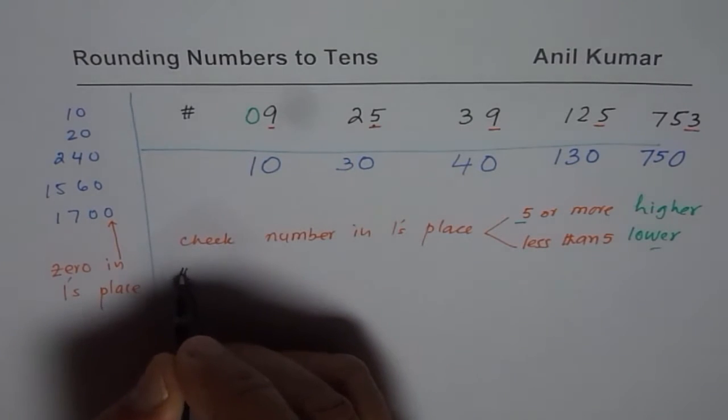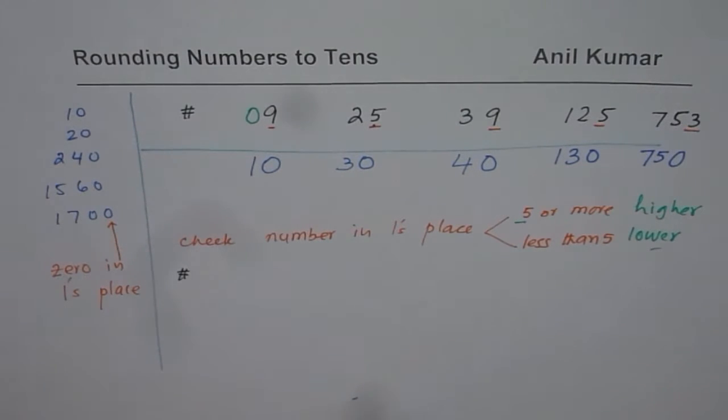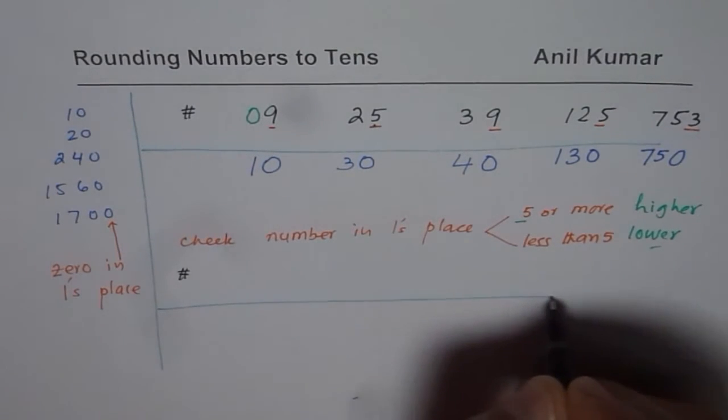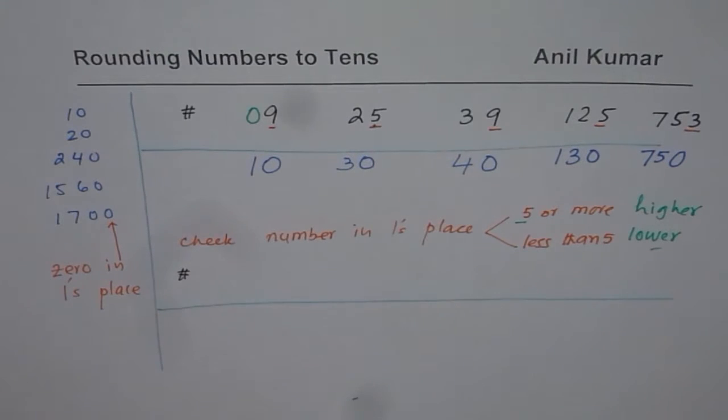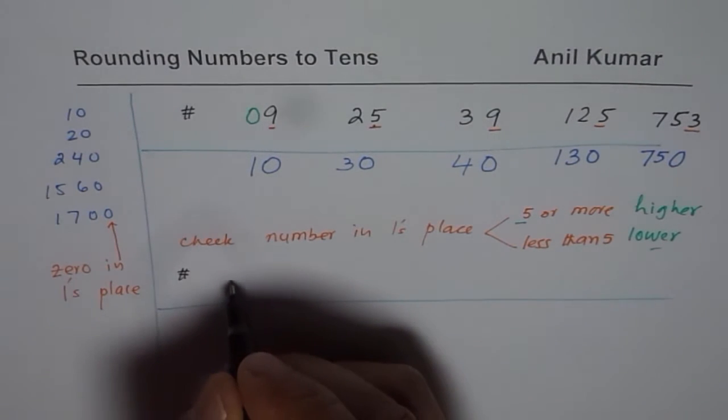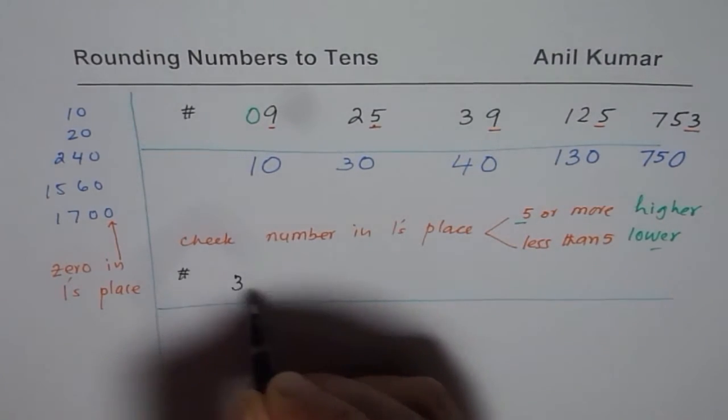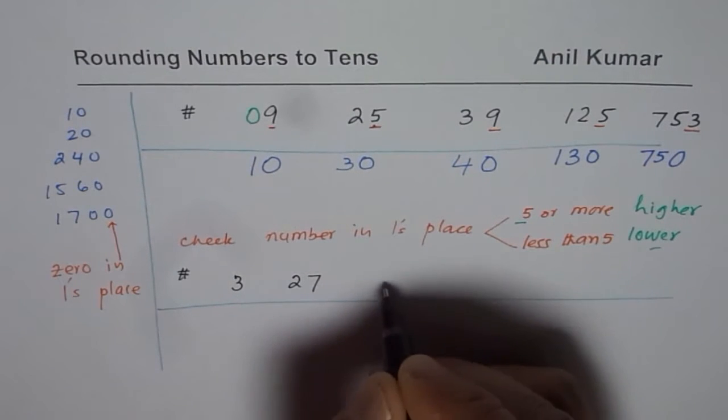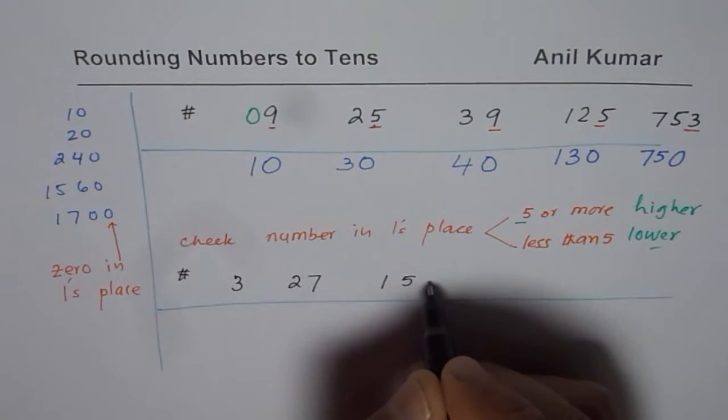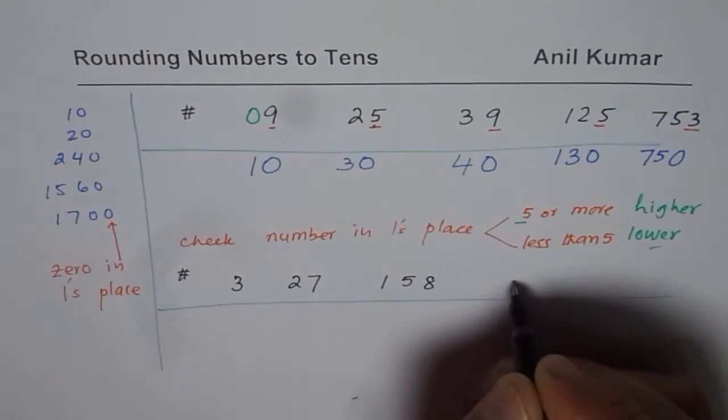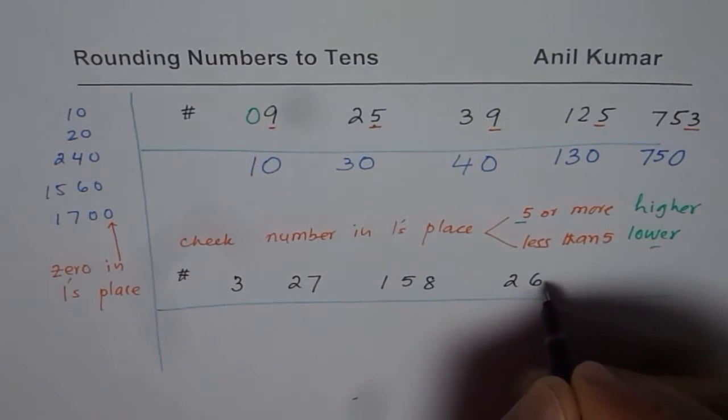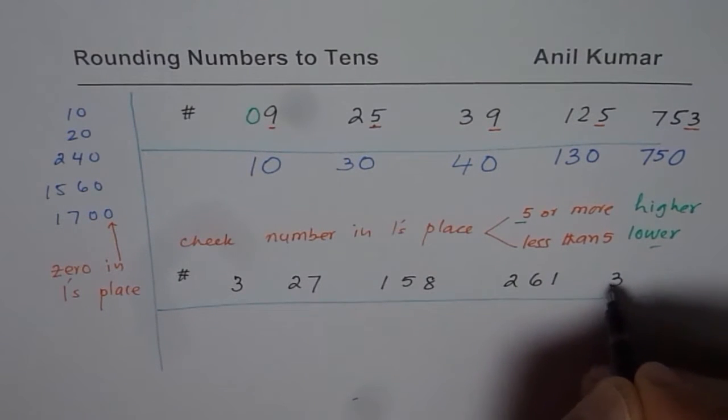Let me take a few more examples here. Now this time, you can pause the video and then answer. So the numbers for you are, let us say, 3, 27, 158, 261, and 3,520.